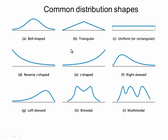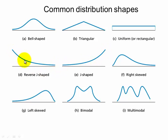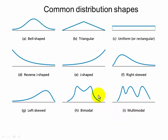We have the bell shape, the triangular shape, uniform, what's called the reverse J, the J shape — sometimes known as exponential growth — exponential decay, skewed right, skewed left, bimodal, and multimodal. We'll discuss these more in this video.